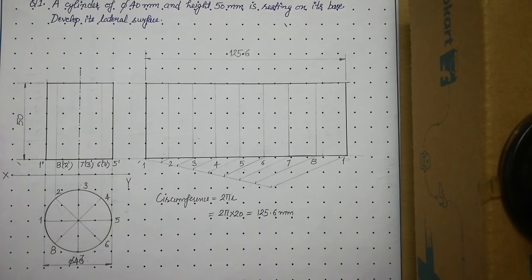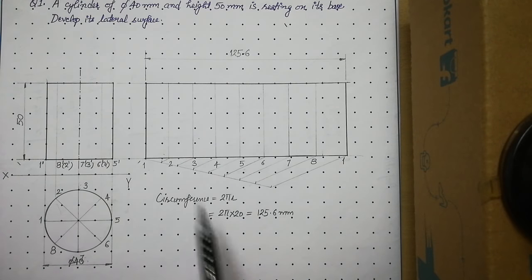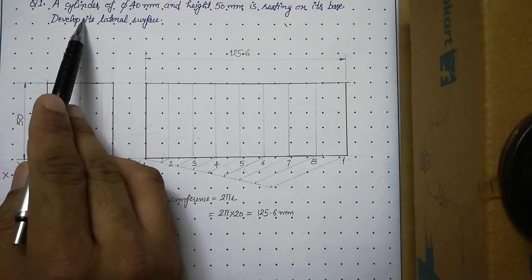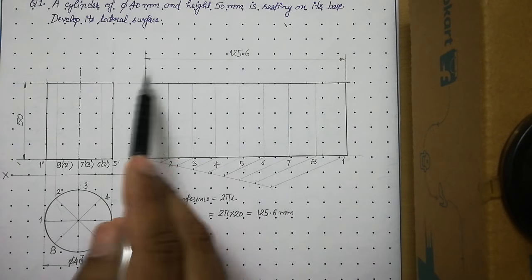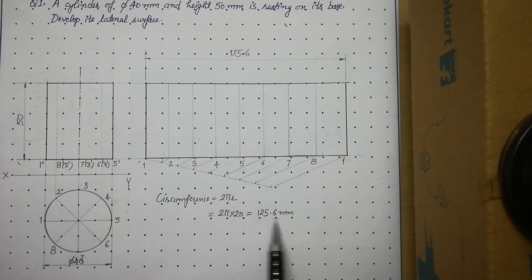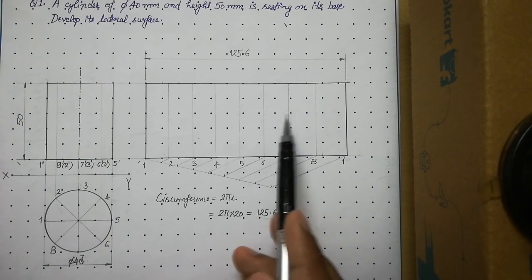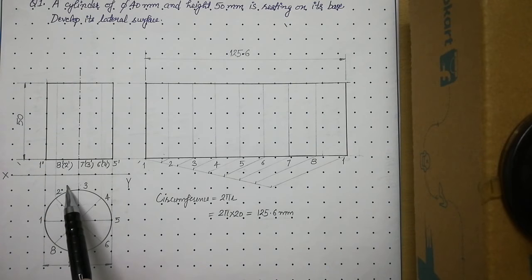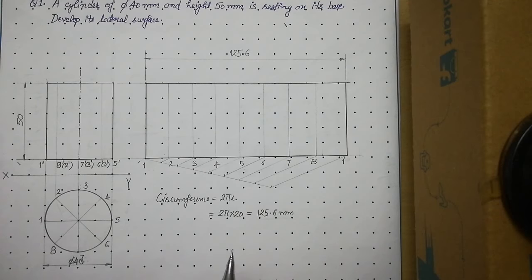To summarize: after drawing the front and top views of the given solid, first calculate the circumference in case of a cylinder. Then construct a rectangle leaving some gap from the front view — the length of that rectangle equals the circumference and the height equals the height of the cylinder. Then divide that rectangle into 8 equal parts because we divided the cylinder into 8 generators. I hope the development of the cylinder is clear to you. Thank you very much.